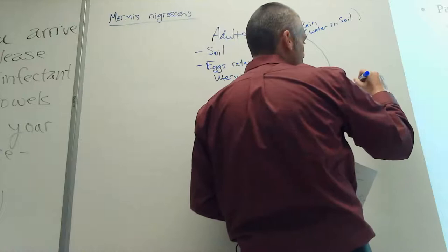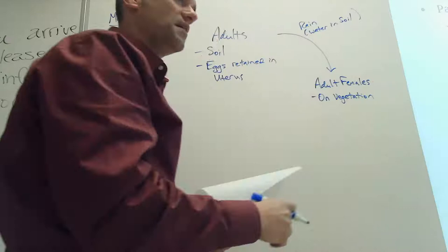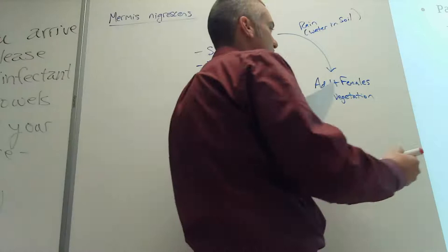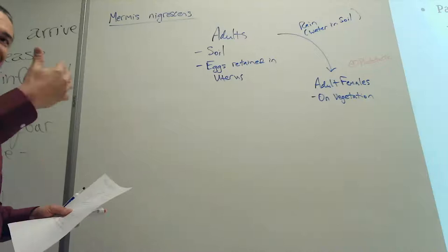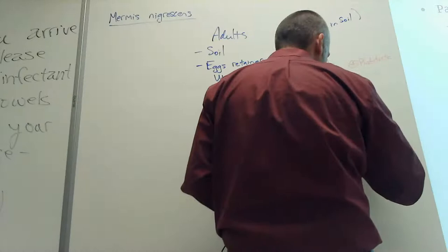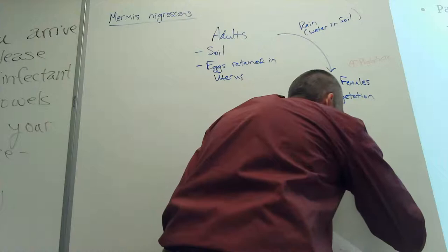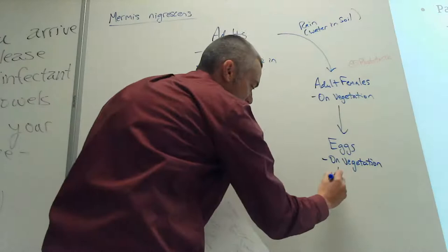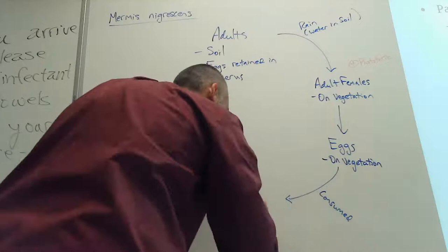It doesn't really need the males because the eggs are already inside the female. Our adult females are positively phototactic — constantly trying to move toward the light — which prompts the climbing behavior. They're going to be on the vegetation, and these females will deposit the eggs there, sticking with the byssi on those eggs. Then the eggs are going to be consumed by our grasshopper host.